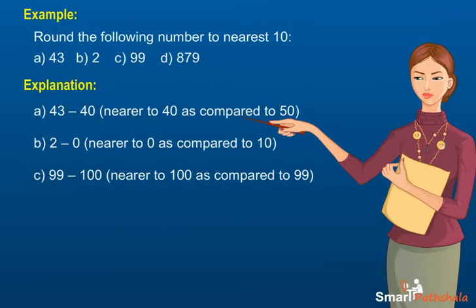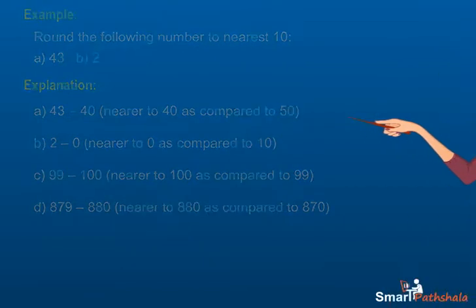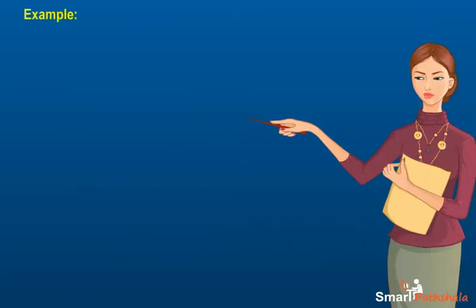d) Since the units place digit is 9, 879 is rounded off as 880. Rounding to nearest 100 is very similar to rounding off to nearest 10. Consider a number 345. This number lies between 300 and 400. It is nearer to 300, hence the number is rounded as 300.